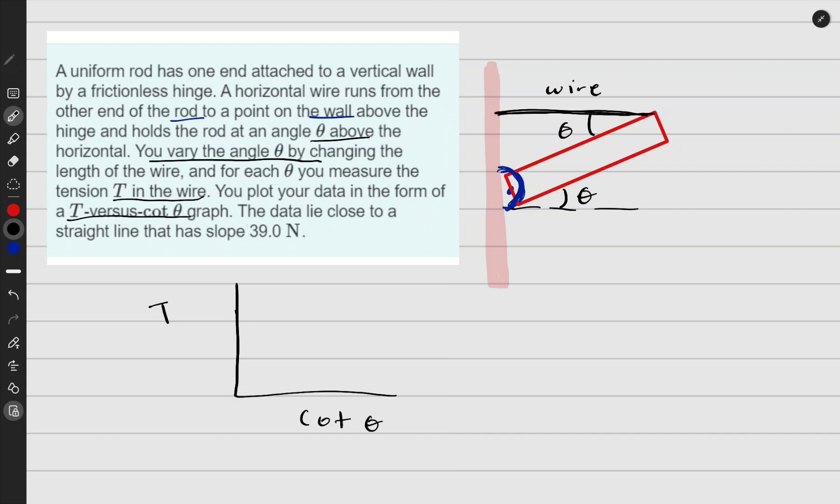And then to find a straight line, and then with that data, your data becomes like this after you experiment. And you find the slope, which is change in T divided by change in cot theta. You find that to be equals to 39.0 N.